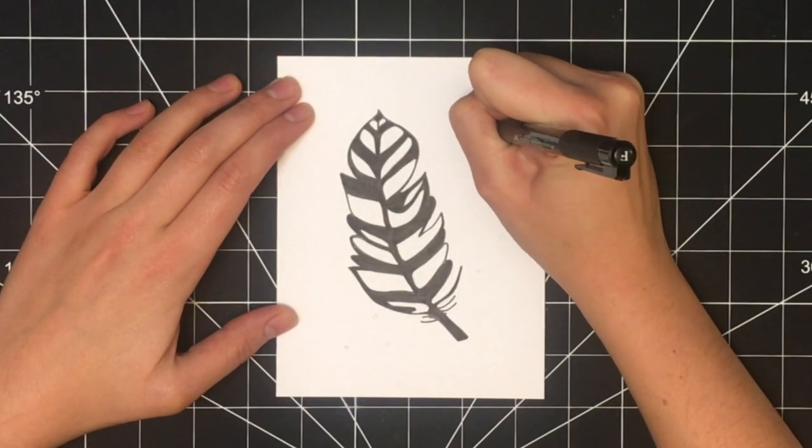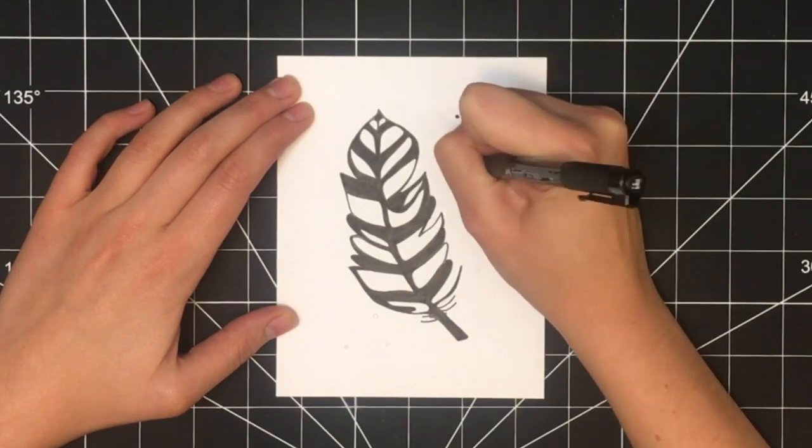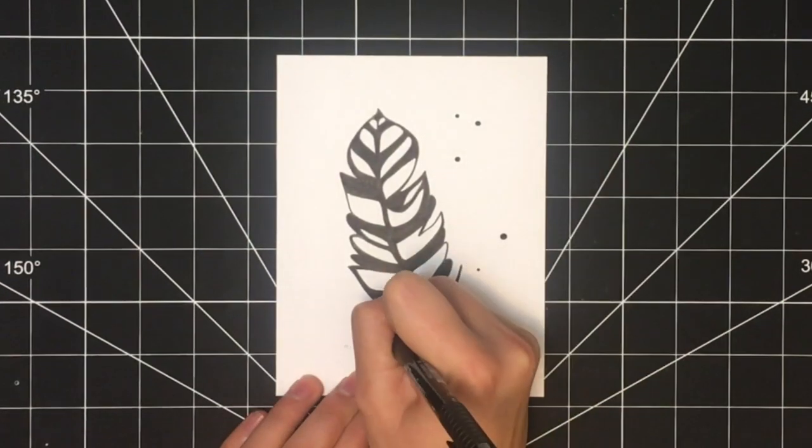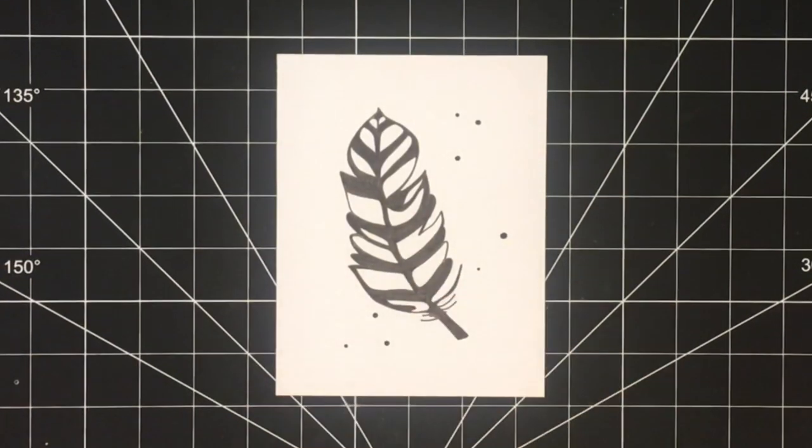The next step is to draw in these accent dots for the design. For this, I switched back to my thin black pen. These are entirely random. You could add more or less or simply don't add them at all.